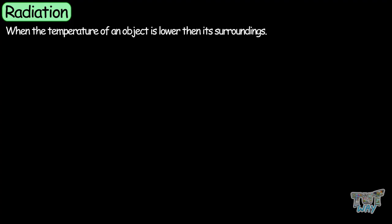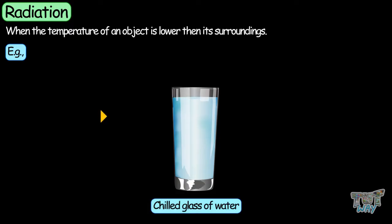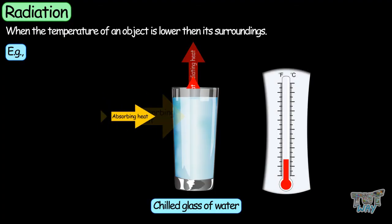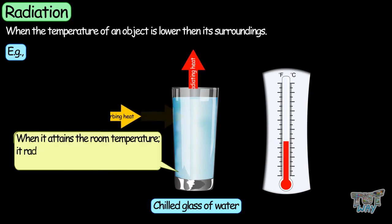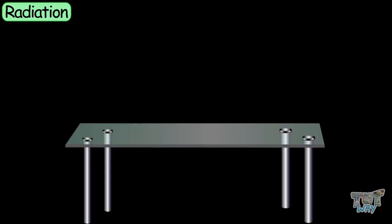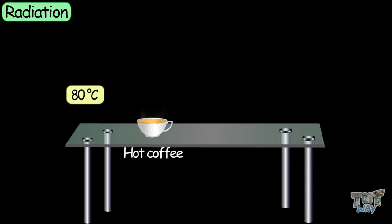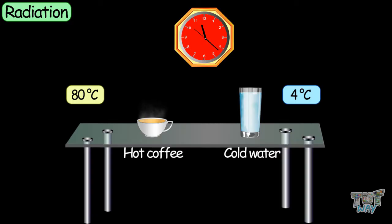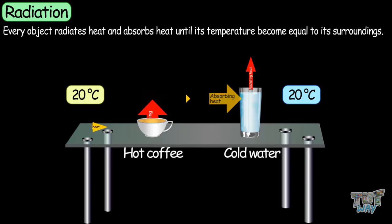When the temperature of an object is lower than its surroundings — for example, a chilled glass of water — it absorbs more heat than it radiates, and as a result its temperature keeps increasing until it equals the temperature of its surroundings, at which point it radiates and absorbs the same amount of heat. So if you place a hot cup of coffee and a chilled glass of water on the same table, after some time both will have the same temperature, because every object radiates and absorbs heat until its temperature equals its surroundings.